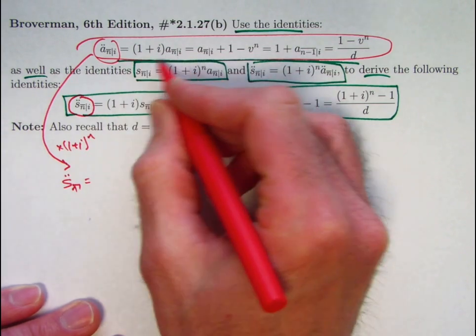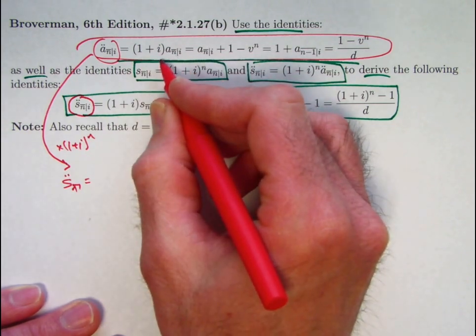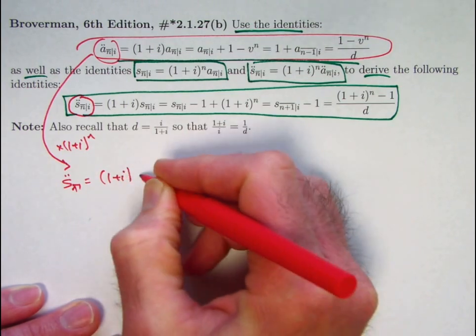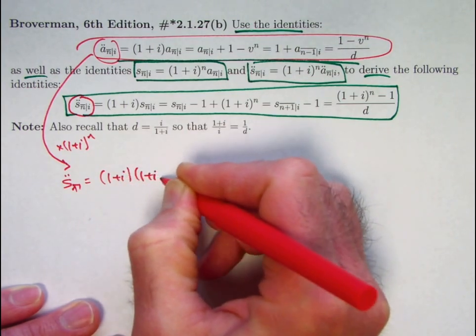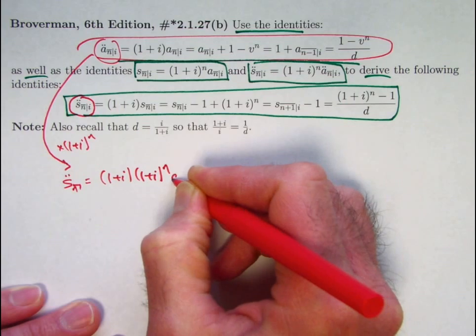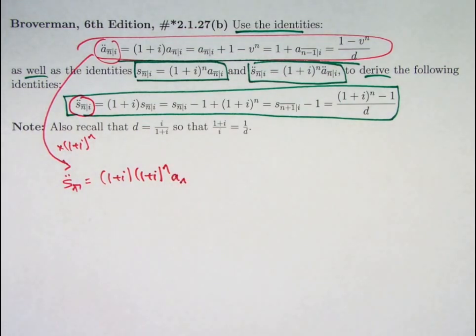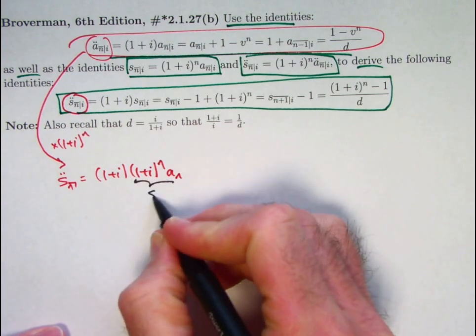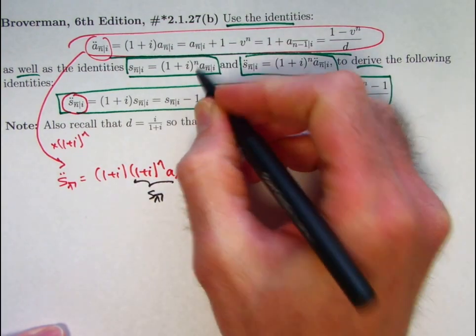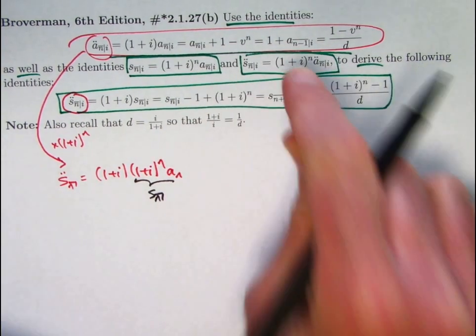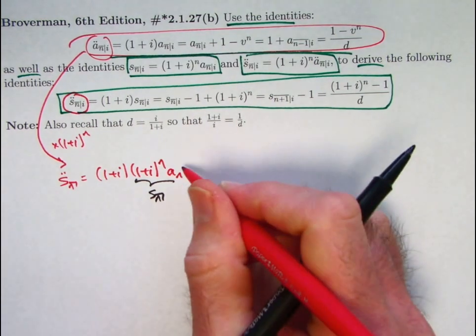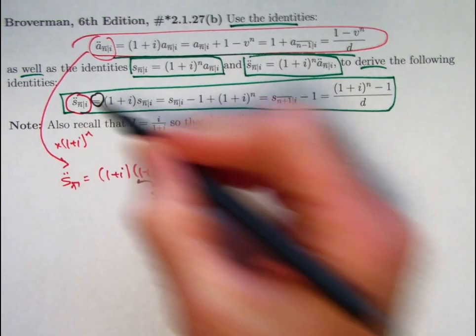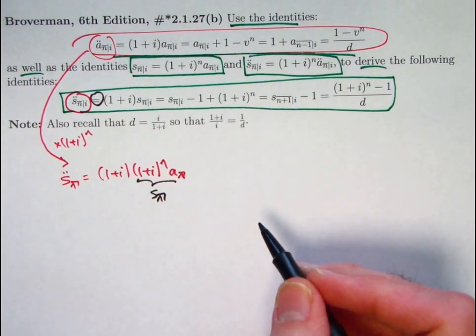Same kind of thing is going to happen when you multiply this thing by 1 plus i to the n. You'll get 1 plus i times 1 plus i to the n times a_n. But this part right here is s_n. We're using these identities essentially so far and we will continue to do so. So that verifies this equality. That's what we've verified so far.